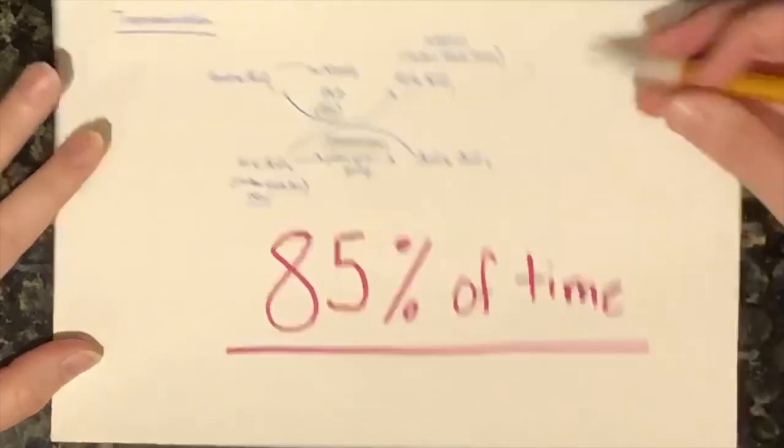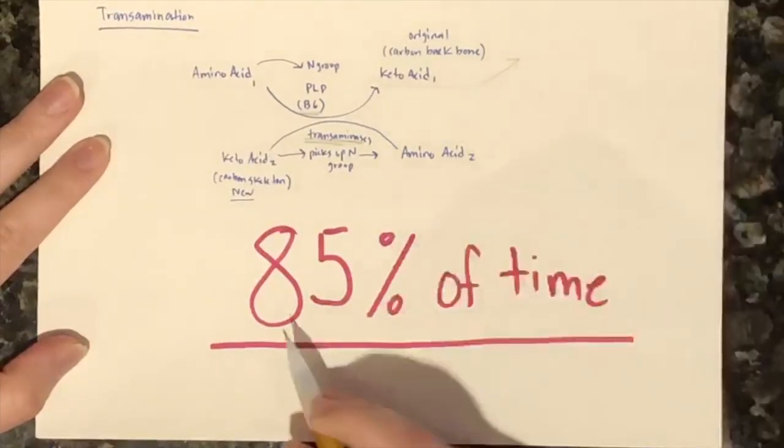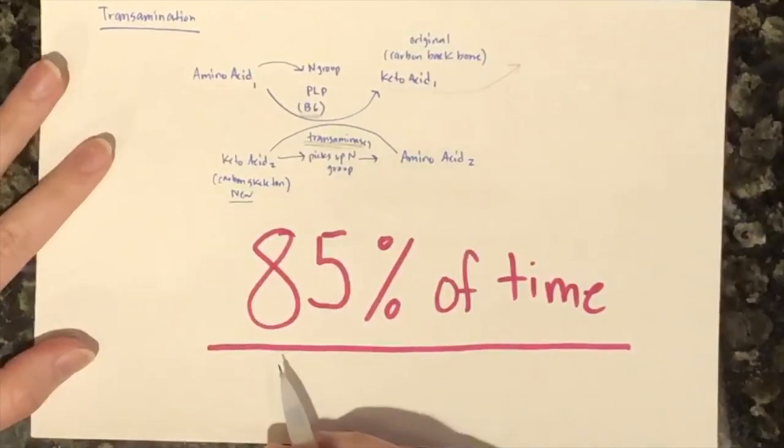It is critical that we have healthy amounts of B6 to undergo transamination, and this process will ideally happen 85% of the time.